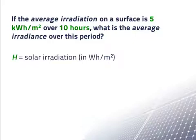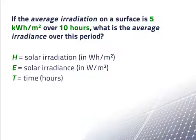The terms we will need to know are H for the solar irradiation in kilowatt hours per meter squared, E for the solar irradiance measured in watts per meter squared, and T for the amount of time measured in hours.